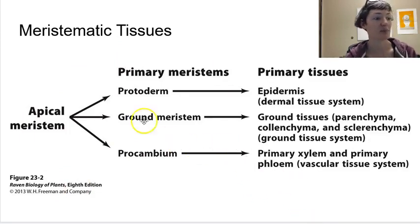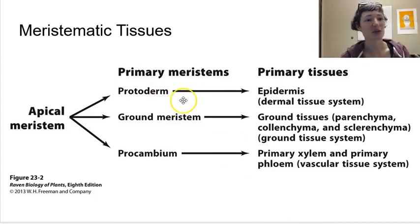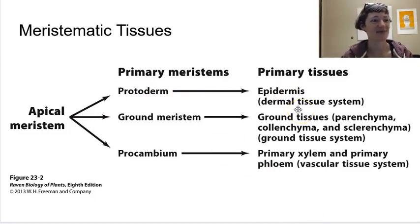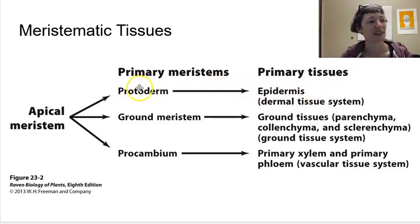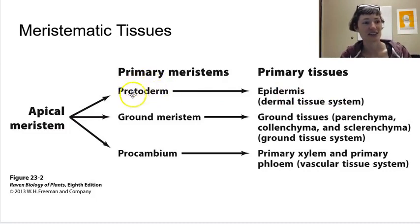Primary tissues that can be made from the protoderm — the protoderm is really simple. It's the outermost layer of cells, and the protoderm makes the epidermis. That's the only tissue it's going to make, so it's pretty straightforward. Proto means prior to, or first, so it's the first skin, and this makes the epidermis the outer skin — that's our dermal tissue system.